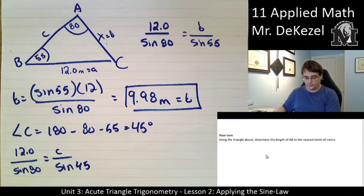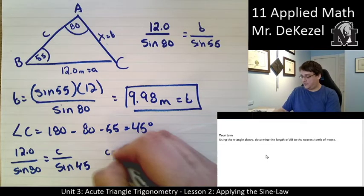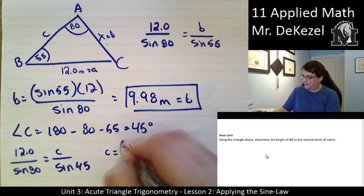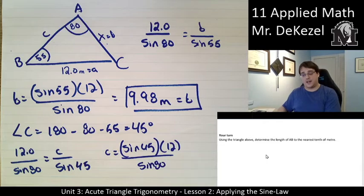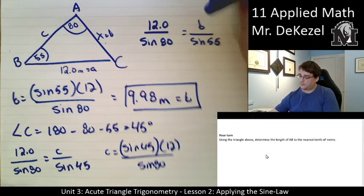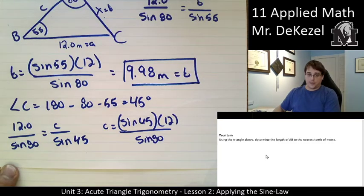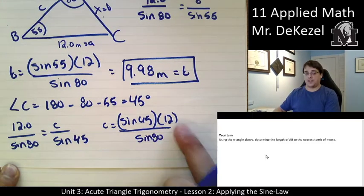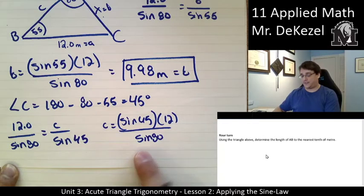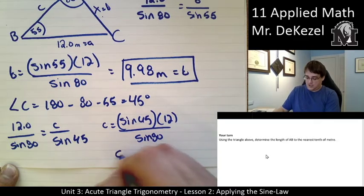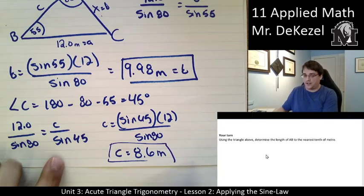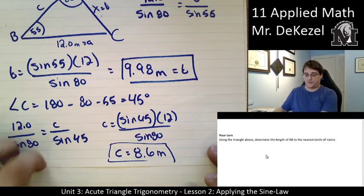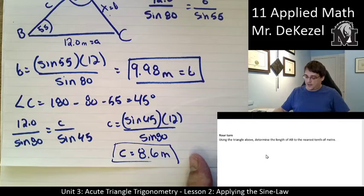We can rearrange this. C would be equal to the sine of 45 times 12 divided by the sine of 80. We punch that into our calculator. Sine of 45 equals times 12 equals divided by bracket, sine of 80, close bracket, equals C is 8.6 meters. Again, that makes sense. It's nothing wild. It's not half a meter. It's not 300 meters. It's somewhere in our range. So if you got 8.6, that was the correct answer.